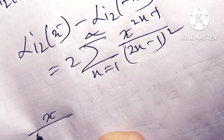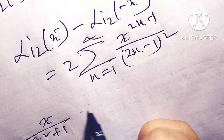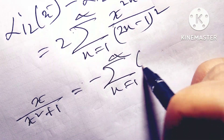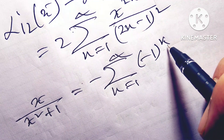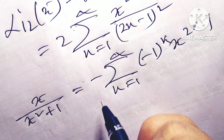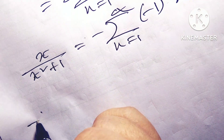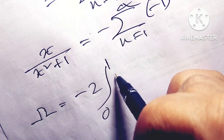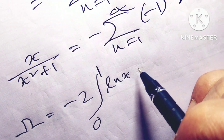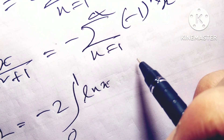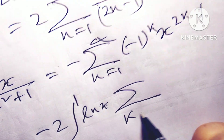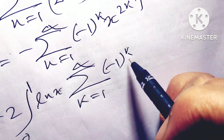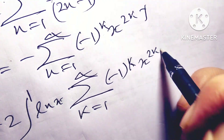And x/(x²+1) can be written as minus summation k=1 to infinity of (-1)^k · x^(2k-1). After that, omega equals summation k=1 to infinity of (-1)^k · x^(2k-1).